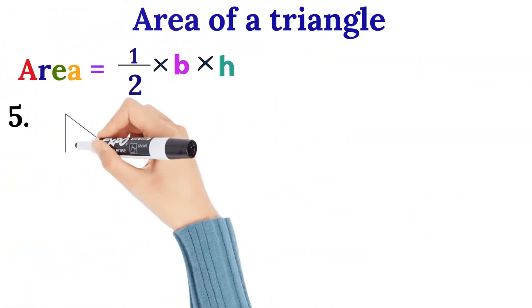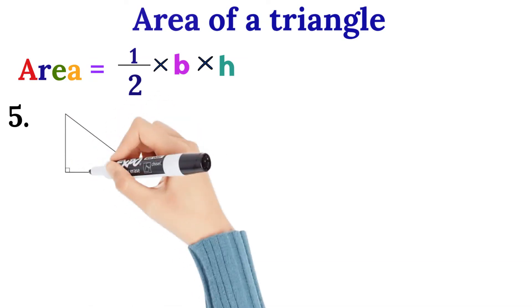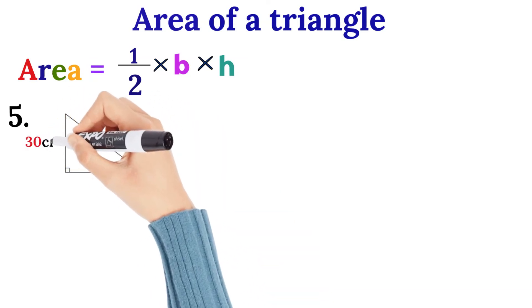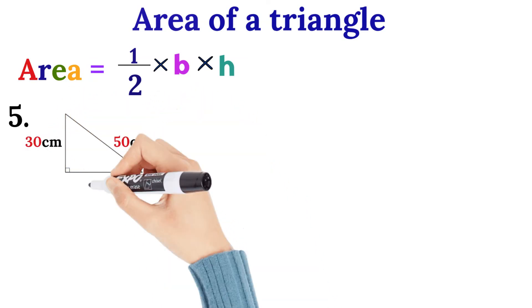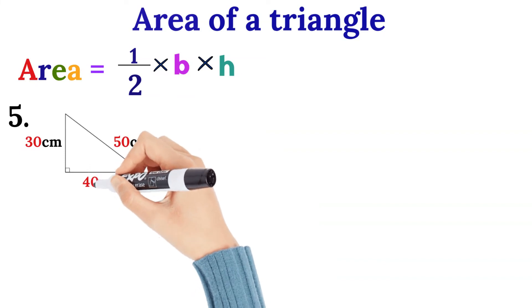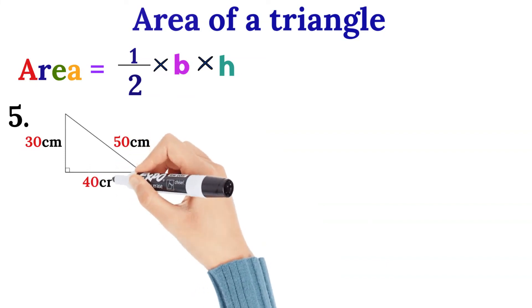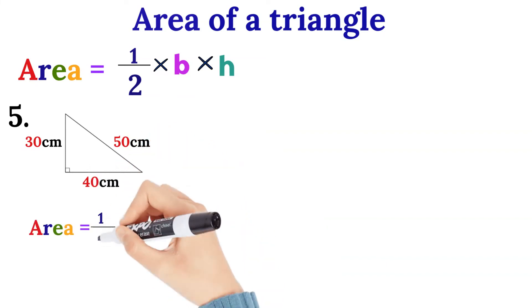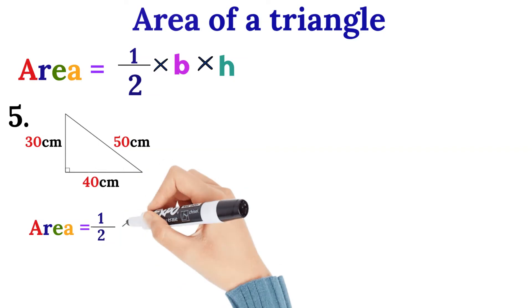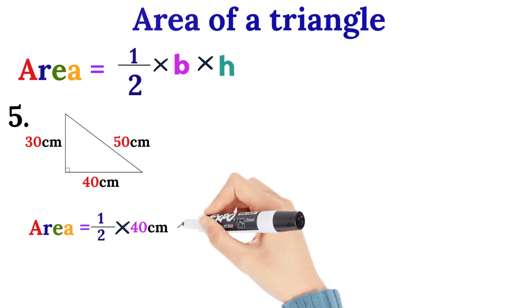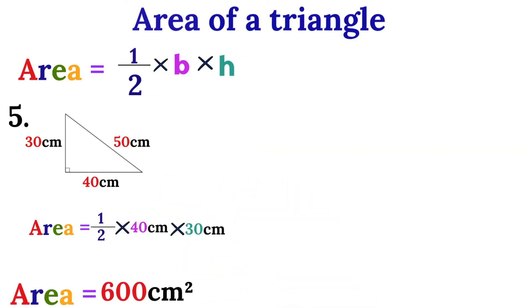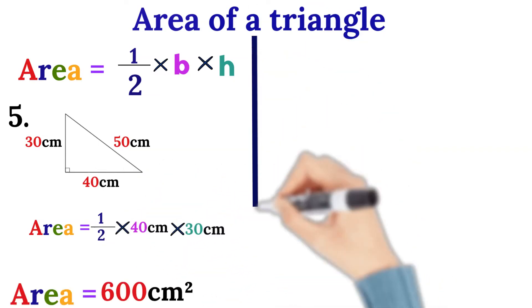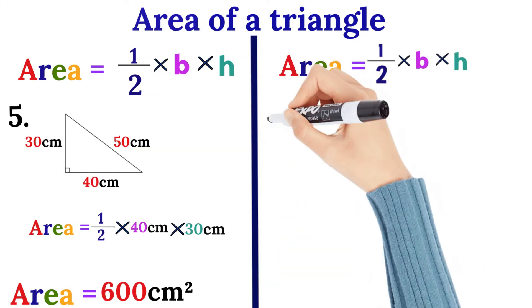Example number five. The base is 40 cm and the height is 30 cm. Half of 40 gives us 20. So 20 times 30 gives us 600 cm squared.